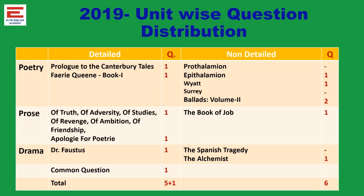This is the 2019 Unit Wise Question Distribution of TRB PG English exam. The first unit, Modern Literature, contains three genres: poetry, prose, and drama. As usual, it has got detailed and non-detailed works.